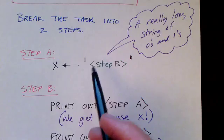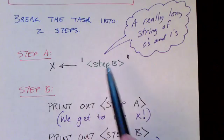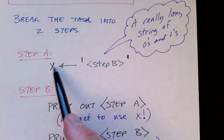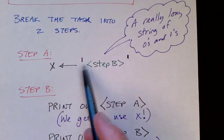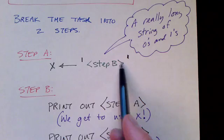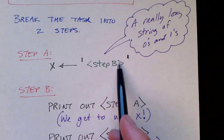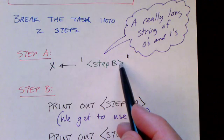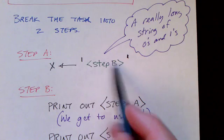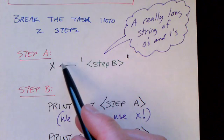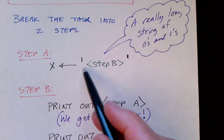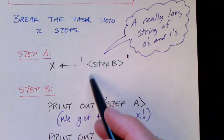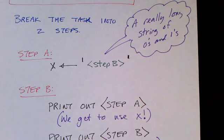In our first step, we're going to effectively store a long string somewhere. It's a long string of zeros and ones that has some information. What the first part of the Turing machine is going to do is write that string onto the tape, and then pass control to the second part of the Turing machine.